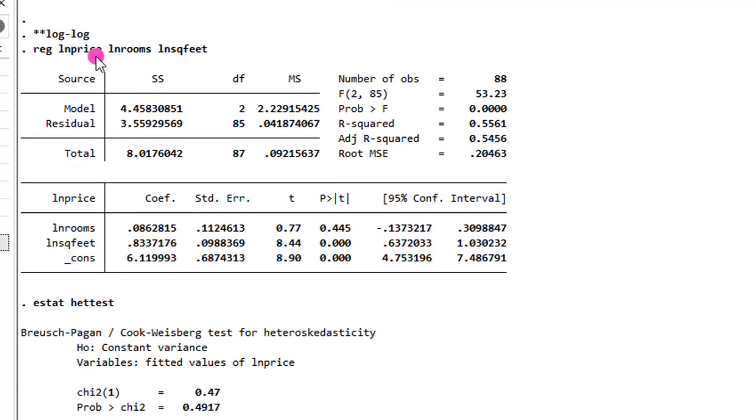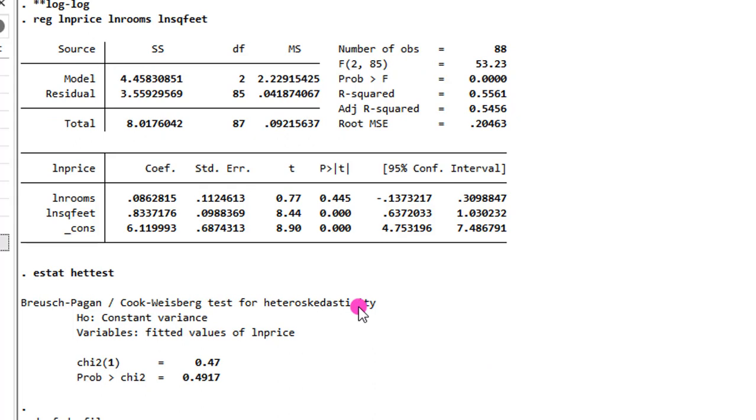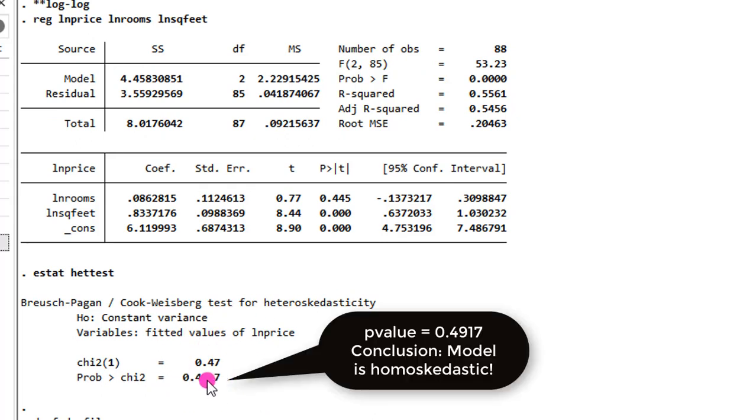Lastly, let's take a look at the log-log functional form of this model, where all the variables are in their natural logs. The result from the Bruch-Pagan confirms that the model is now homoskedastic.